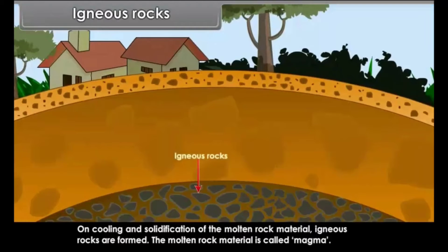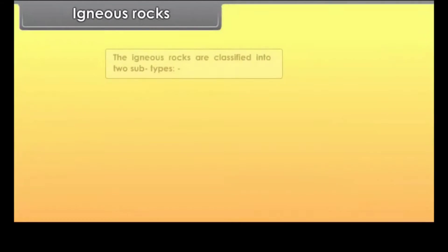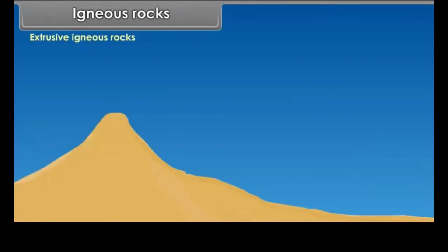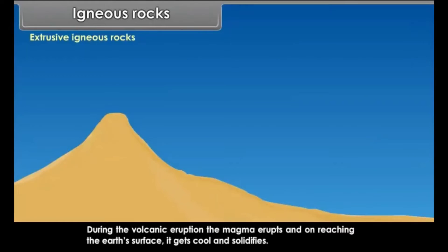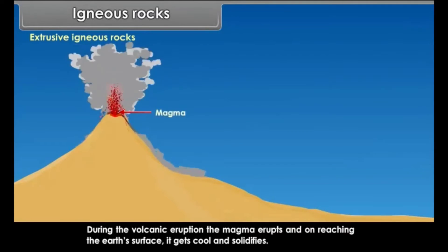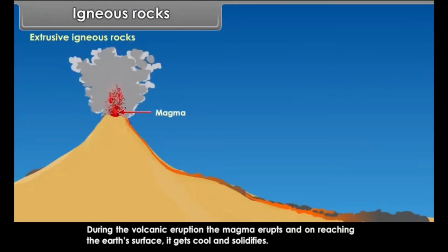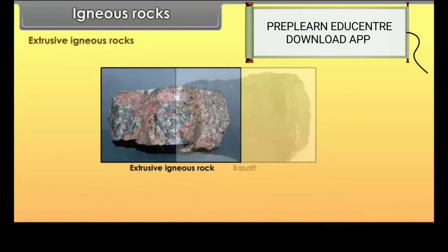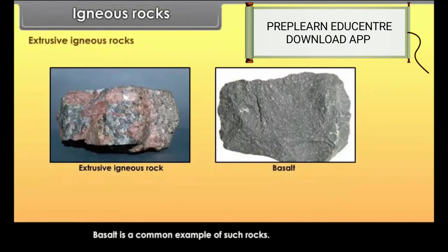The molten rock material is called magma. Igneous rocks are classified into two subtypes: extrusive igneous rocks and intrusive igneous rocks. During volcanic eruption, the magma erupts and on reaching the Earth's surface, it gets cool and solidifies. Rocks formed due to solidification on the Earth's surface are known as extrusive igneous rocks or volcanic rocks. Basalt is a common example of such rocks.